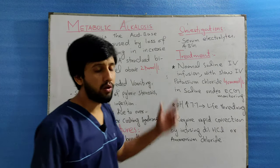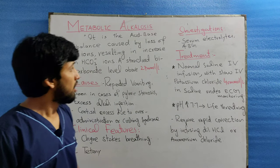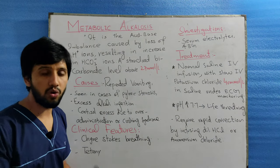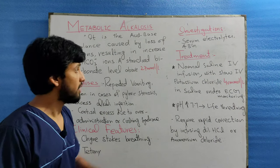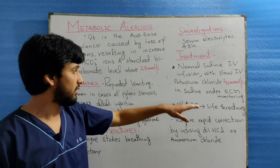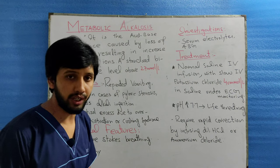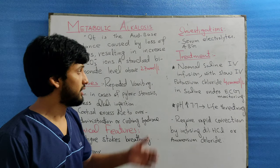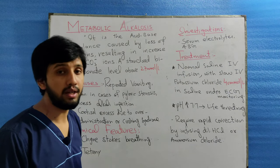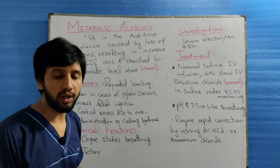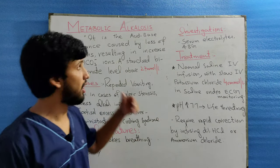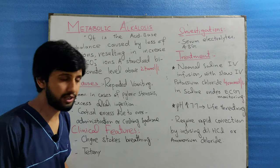Moving to the treatment of this condition. Normal saline IV infusion is given with a slow IV potassium chloride 40 millimoles per liter in saline, under ECG monitoring. ECG is monitored in this condition because there may be hypokalemic alkalosis, which occurs in metabolic alkalosis patients.